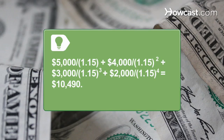the present value is $5,000 divided by 1.15, plus $4,000 divided by 1.15 squared, plus $3,000 divided by 1.15 cubed, plus $2,000 divided by 1.15 to the fourth power, equals $10,490.